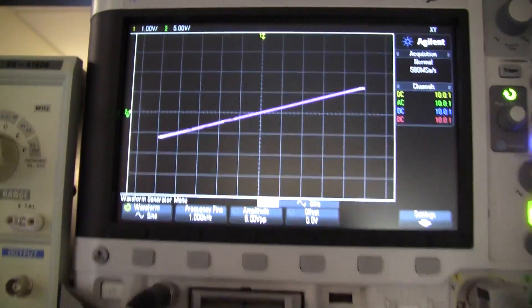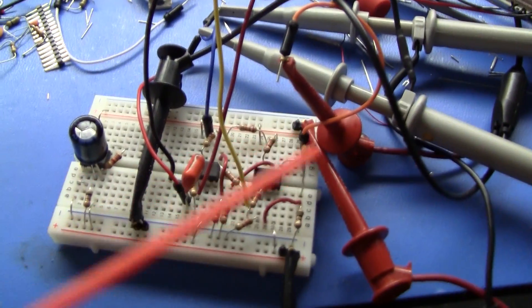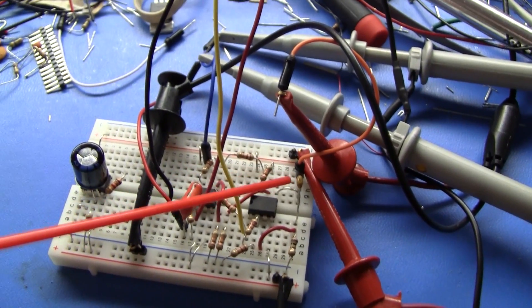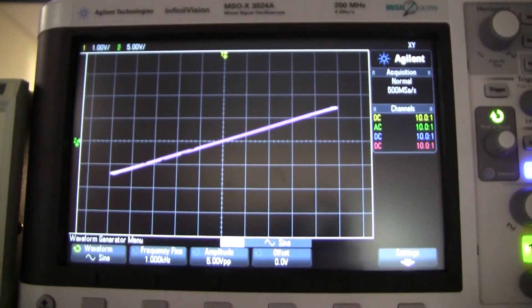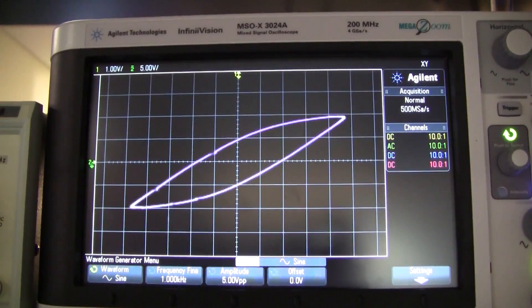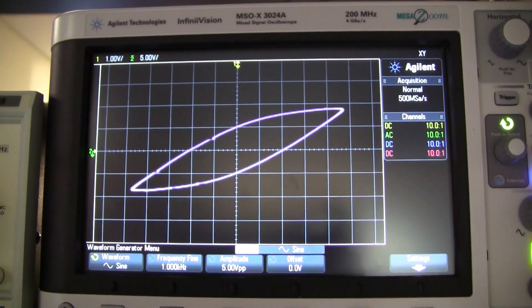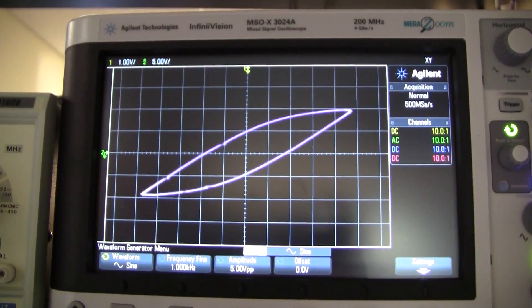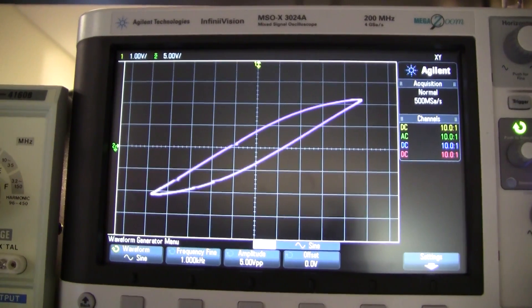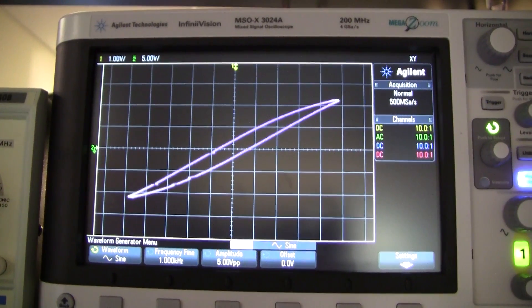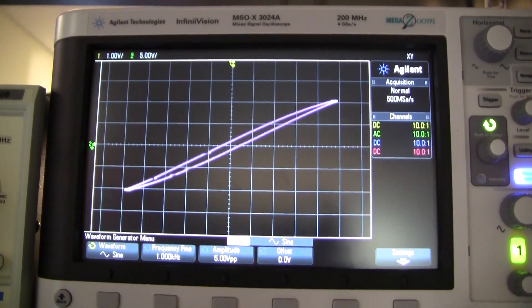Now I'm going to cool down that capacitor down here with freezer spray. You can see an interesting thing happens - once it gets below a certain temperature it actually becomes ferroelectric and you get this hysteresis curve which looks a whole lot like the BH curve of a ferromagnetic material.